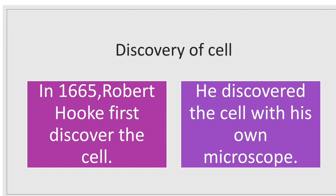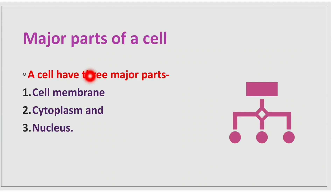Now, the discovery of cell: in 1665, Robert Hooke first discovered the cell. The most interesting thing is he discovered the cell with his own microscope — meaning he first made a microscope, and with the help of that microscope he discovered the cell.